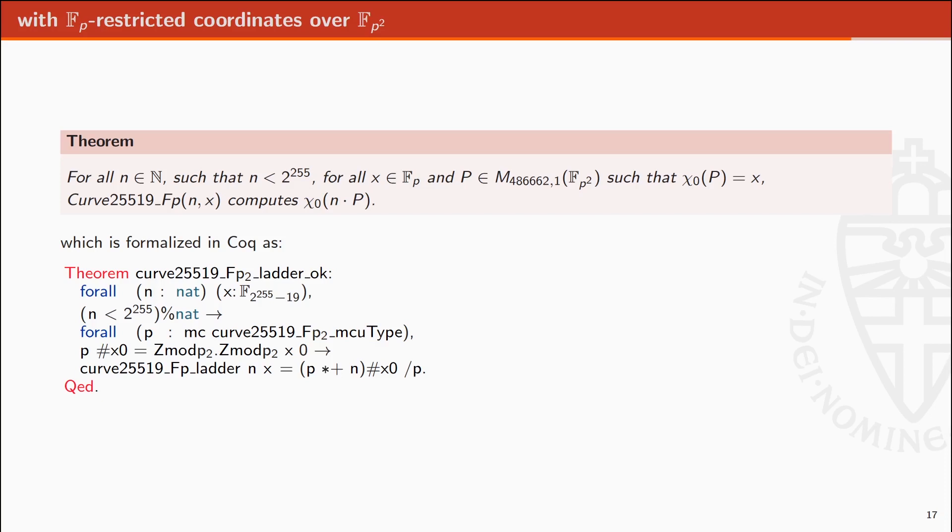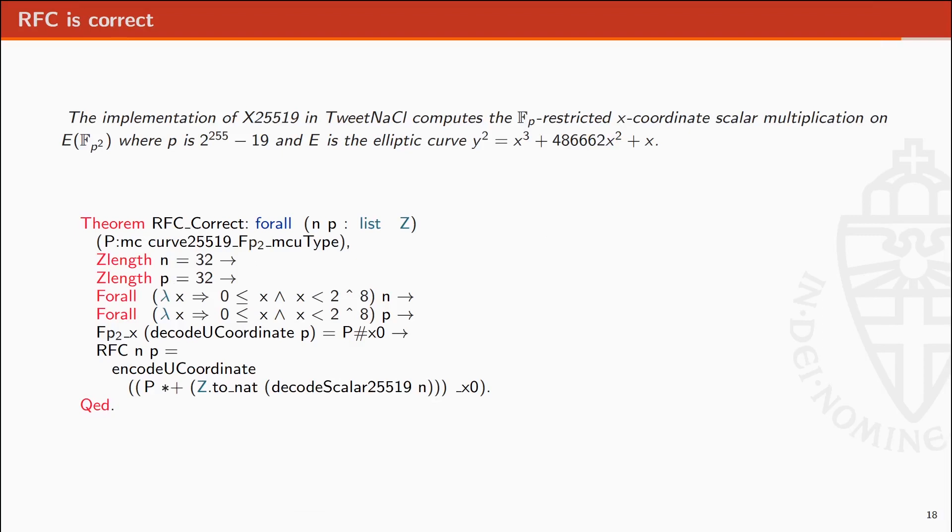This is formalized in Coq as follows. And finally, by showing the equivalence between the Montgomery ladder from the RFC and the one which is proven correct, we are able to infer the correctness of the RFC. By composition, this proves that the code in TweetNaCl implements the RFC and matches the X25519 mathematical definition.